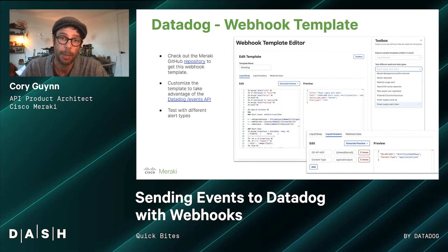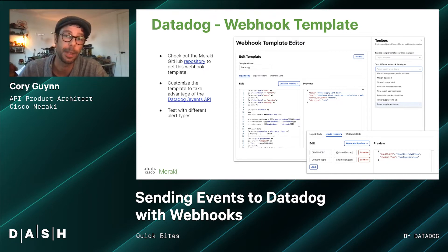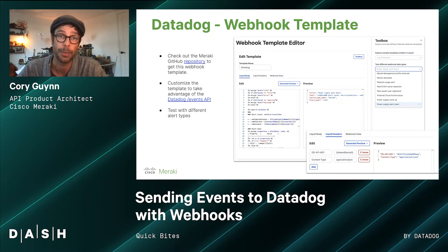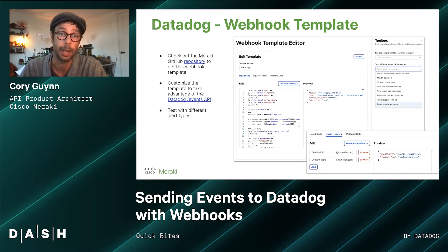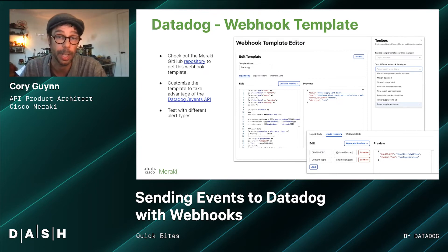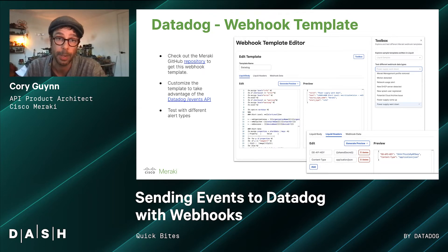Meraki has just introduced a new mechanism that allows you to create a webhook that fits the shape and requirements of a third-party API service. We'll use the Datadog API for the events operation and format our webhook data to fit the expected JSON shape, as well as include our authentication headers. With the Meraki dashboard you can test a number of different potential alerts, check different behaviors, and verify flags like error, informational, or warning alert types to make sure your template is working as expected. This template is open source and available on the Meraki GitHub repository as well as the Meraki documentation.